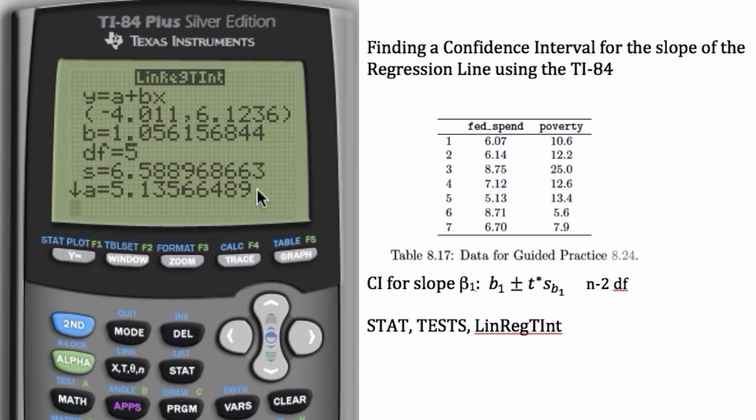You'll see it gives us the interval, left end point, right end point. It gives us our point estimate for the slope. Here it calls it B. We called it B1. It also gives us the degrees of freedom, which is N minus 2. So it makes sense that here we had N is 7, so we have 5 degrees of freedom.